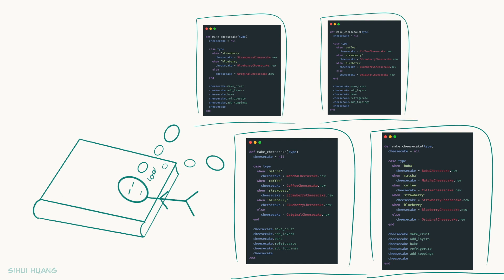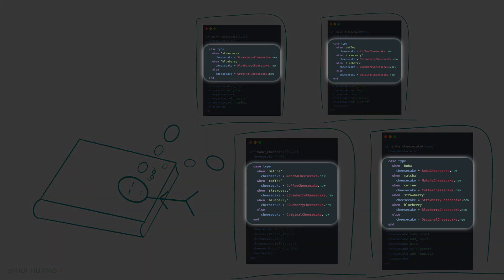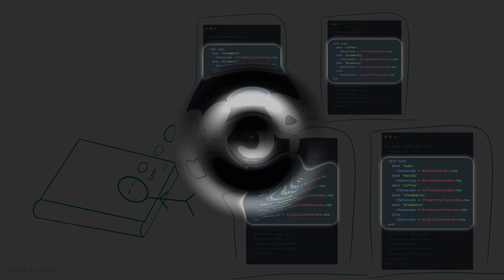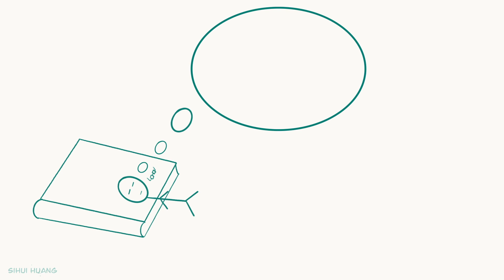He realizes, with all the changes, the only thing that actually gets changed is the case statement that determines which cheesecake class to use. All the following steps about how to make the cake stays intact. That reminds him of the design principle, which says, separate what changes from what doesn't. That's his light bulb moment. What has been bothering him this whole time is that he has to modify the make cheesecake method over and over again, while in reality, the only part that needed to be updated is the case statement.